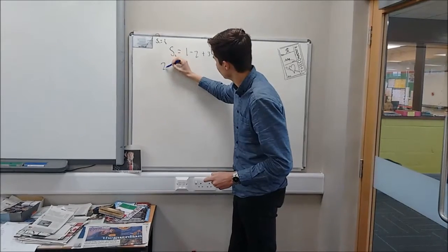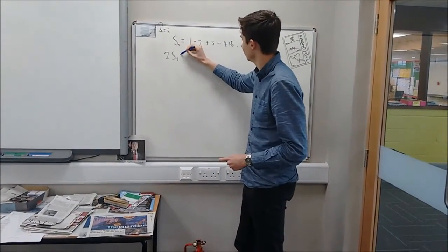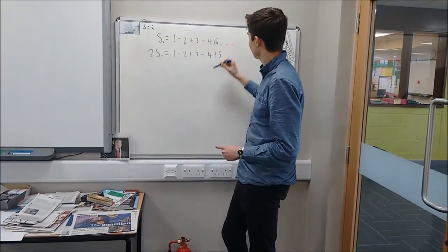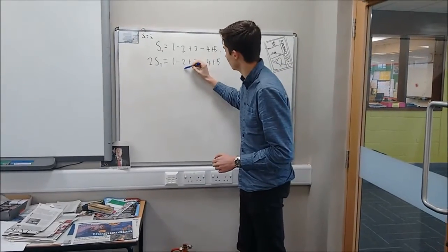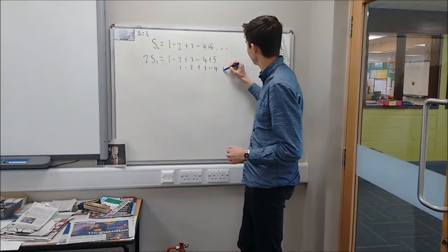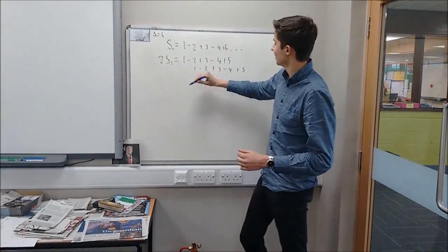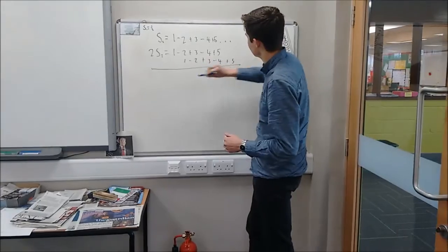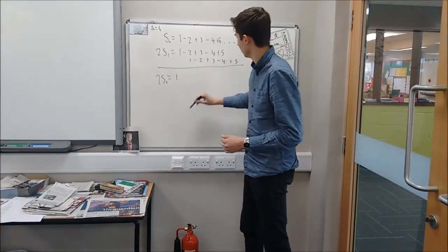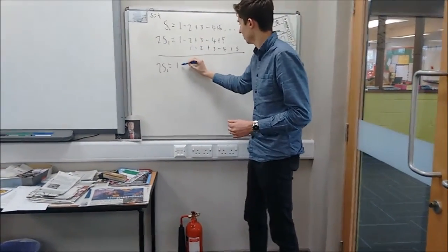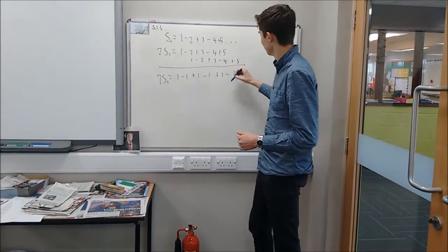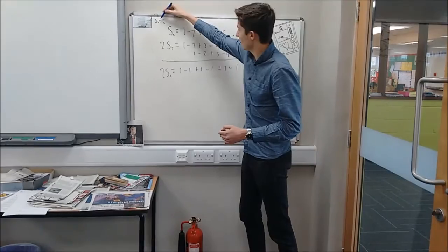So we can do 2S2. What I'm going to do is write it out again, just to make it easier. And we're going to add it to itself, and we're going to shift it on one. So it's going to be 1 minus 2 plus 3 minus 4 plus 5. And so if you see these, you're adding it to itself. 2S2 equals 1, nothing, that's 1 minus 2 plus 1 minus 1, 3 minus 2 plus 1 minus 1 plus 1 minus 1. And so we've got this equation, which is the S1 equation.